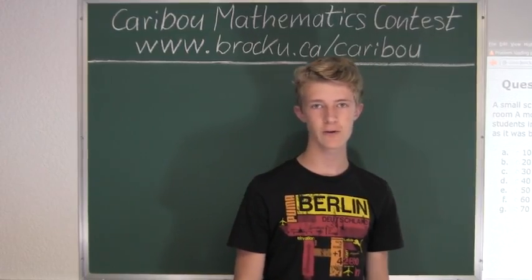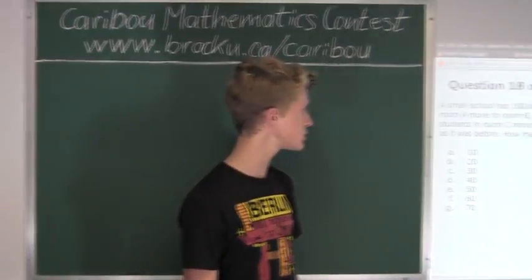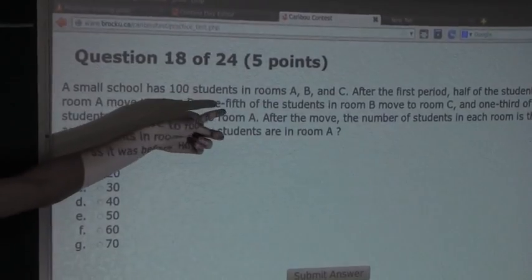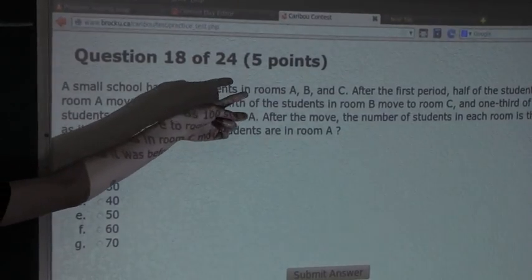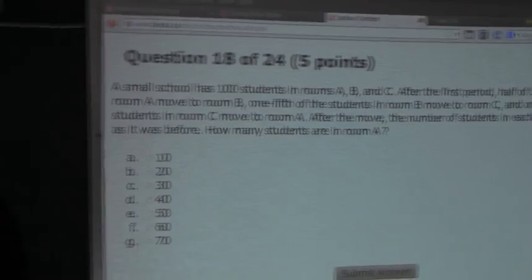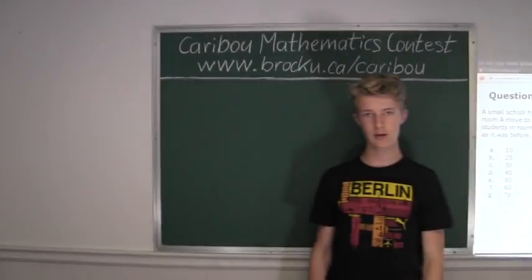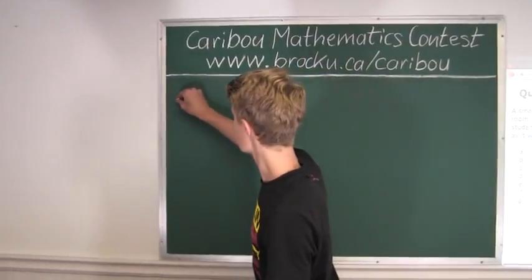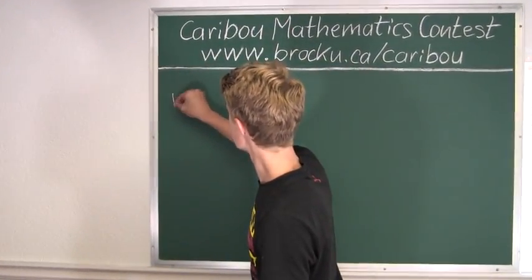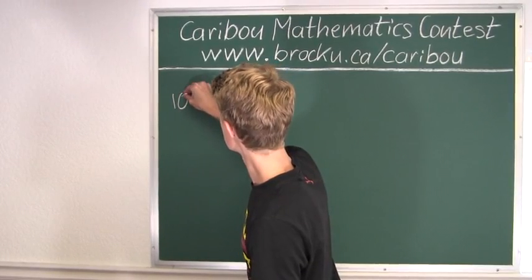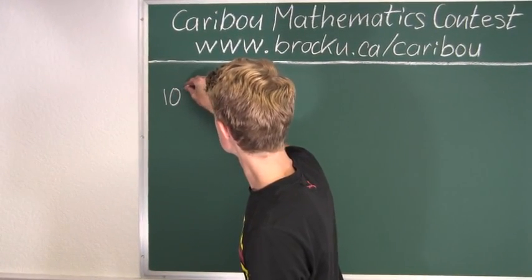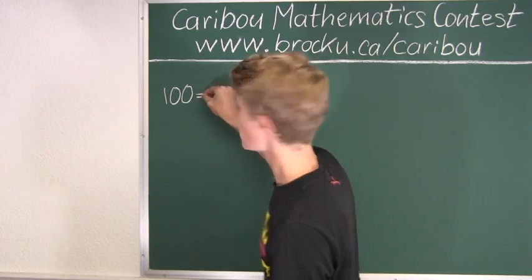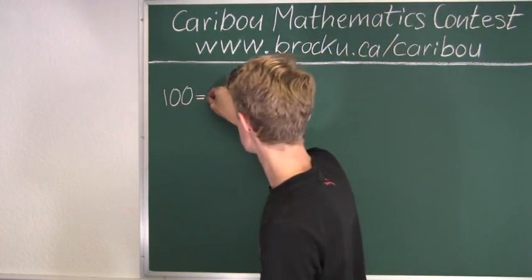Now let's look at the first bit of information given to us. We know that there are 100 students in total in rooms A, B, and C. That gives us our first equation: 100 = A + B + C.